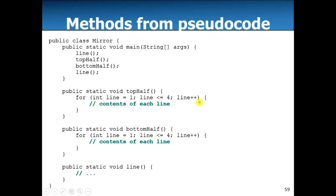You've got a for loop here from line one to four, bottom half, line one to four. I would actually prefer to do the top half entirely and then do the bottom half later, but you can do it either way. Okay, we're going to do some further refinement now.